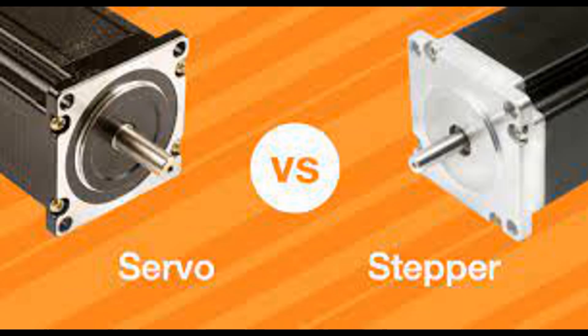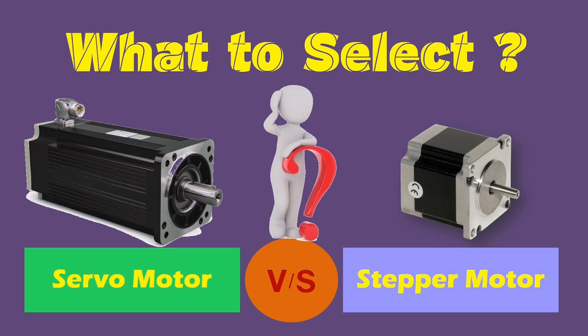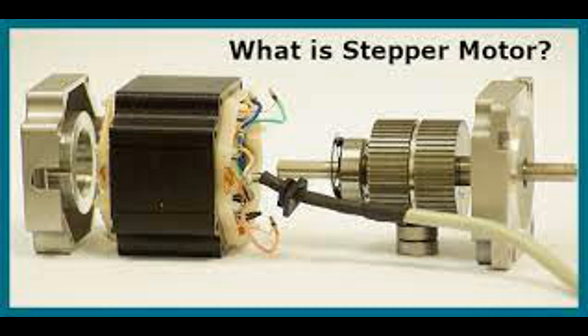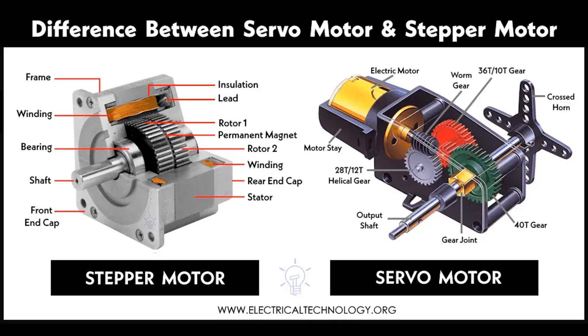AC motors are widely used across various industries and applications due to their efficiency, reliability, and versatility. In industrial applications, they are used to drive water, oil, and chemical pumps in manufacturing, agriculture, and water treatment. They are employed in ventilation systems, cooling towers, and HVAC systems to circulate air and control temperature. AC motors also drive conveyor belts in factories and warehouses for material handling, and are utilized in refrigeration and air conditioning systems to compress gases and maintain cooling.